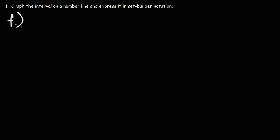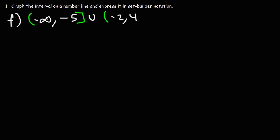For part F, we're going to start from negative infinity and go to negative 5, closing it with a bracket. Then we connect it with another interval starting at negative 2 and ending at 4. Go ahead and try this example problem — graph it on a number line, and then express the mathematical expression in set builder notation.